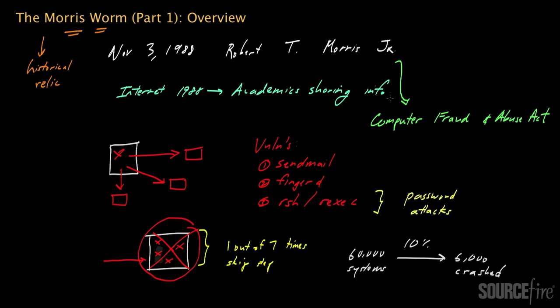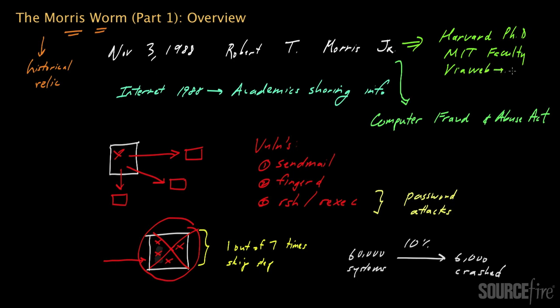Since that time, Robert Morris Jr. has gone on to have an illustrious career in technology. He completed his doctorate from Harvard, joined the faculty of MIT where he's now a tenured professor, and was a co-founder of Viaweb, which was sold to Yahoo in 1998. In 2005, Robert Morris Jr. was among the founding team of Y Combinator, the extremely well-known Silicon Valley startup accelerator. In subsequent videos, I'll dive into more details regarding the underlying mechanics and architecture of the Morris worm.